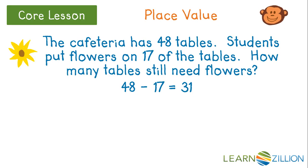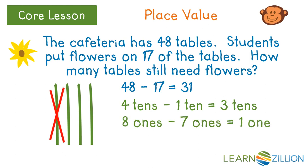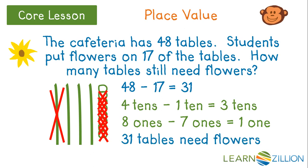He can use some numbers, words, and a picture. Four tens minus one ten is three tens — there's the words and picture. Eight ones minus seven ones is one one — some words, numbers, and a picture. All this proves that 31 tables still need flowers.